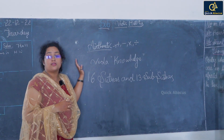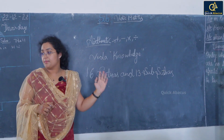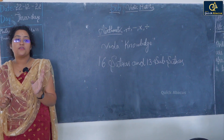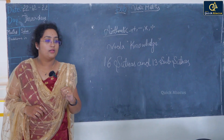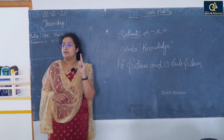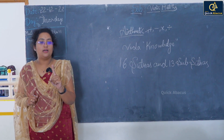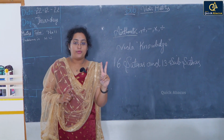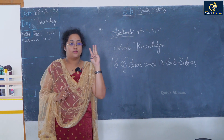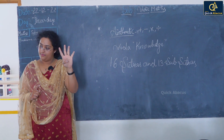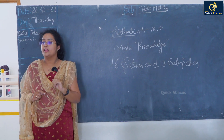Which has been introduced in Vedic Maths. So, there are how many types of Vedas? 4. The first one: Rig Veda, Yajur Veda, Sama Veda, Atharva Veda.